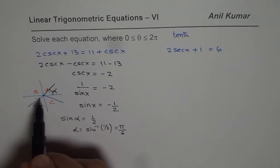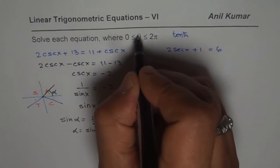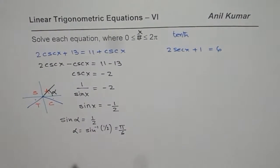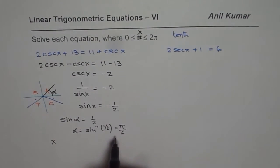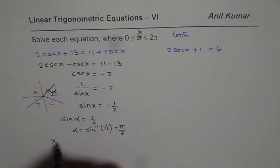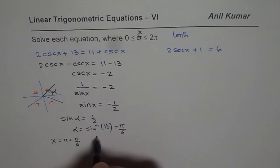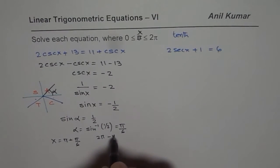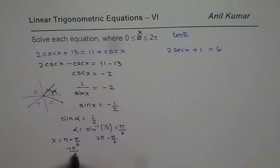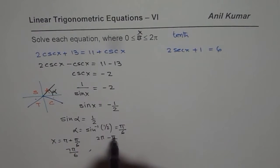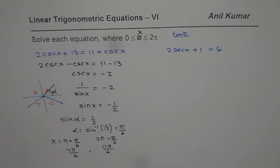Now in these two quadrants what is going to be the principal angle? So x within 0 to 2π will be: here it equals π + π/6, and in this quadrant it is going to be 2π - π/6. π + π/6 is 7π/6, and 12 minus 1 is 11, so we get 11π/6. These are the two exact values.